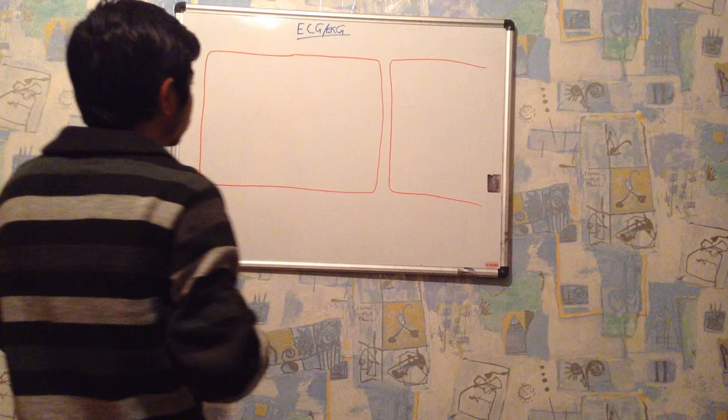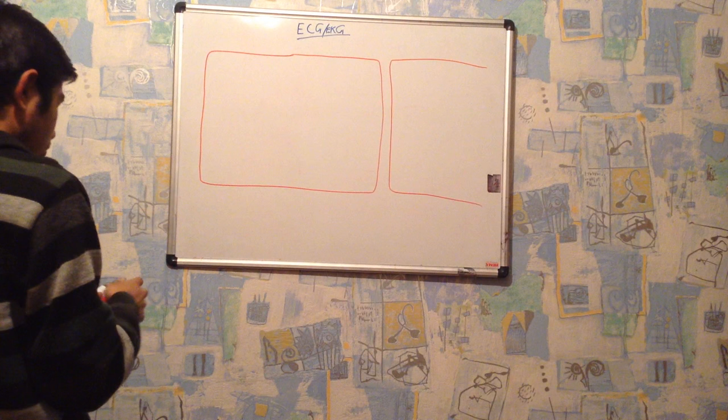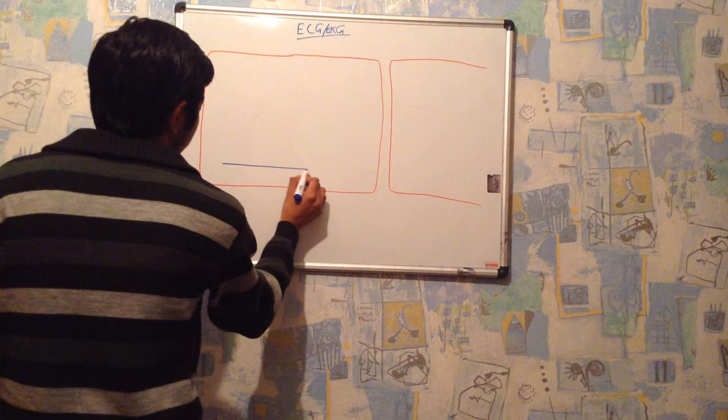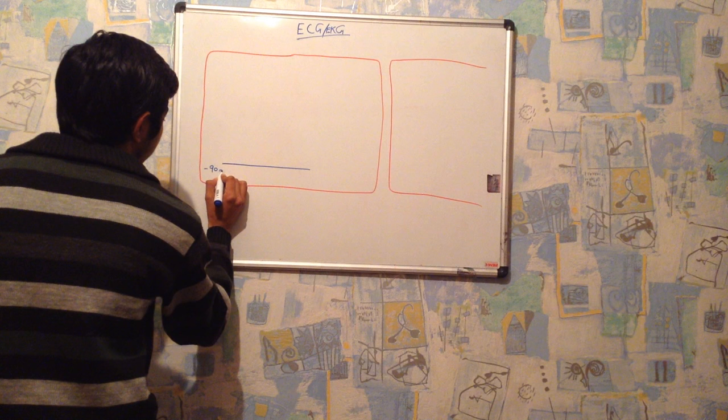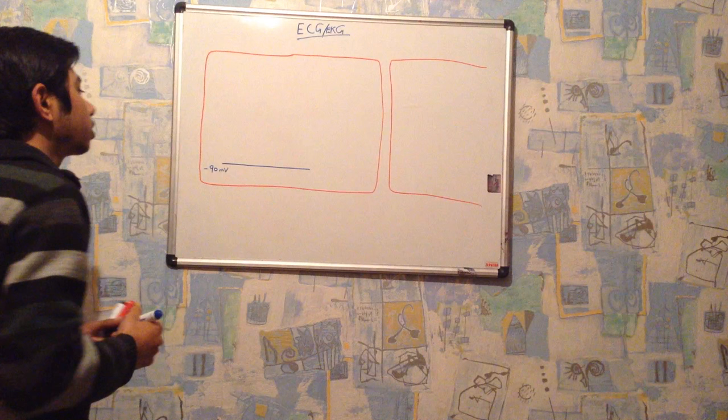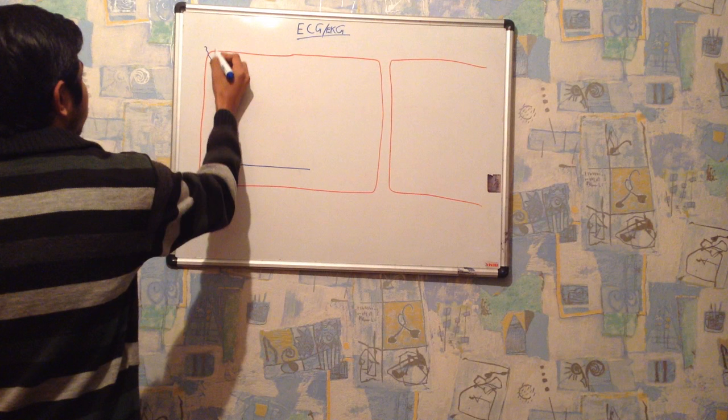First I will show you how action potential is moving inside this cardiomyocyte. Let's suppose initially this cardiomyocyte is at resting position. This cardiomyocyte has a resting membrane potential of minus 90 millivolts. Usually the cardiomyocyte is electronegative in nature, so its resting potential is minus 90 millivolts.